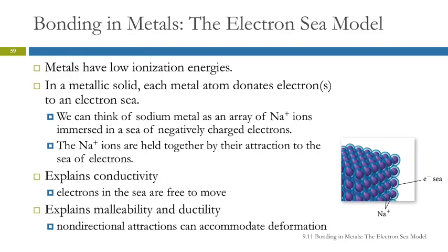This model explains conductivity, malleability, and ductility of metals. Metals can conduct electricity because these electrons are free to move around. They are not tied to a particular atom and so they can move. And electric current is the flow of electrons.